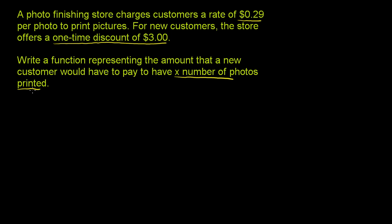So x is the number of photos printed. A regular customer would have to pay the number of photos times $0.29 a photo. If we let y be the amount a customer would have to pay, a regular customer would pay 0.29x. That's how much a regular customer would have to pay.